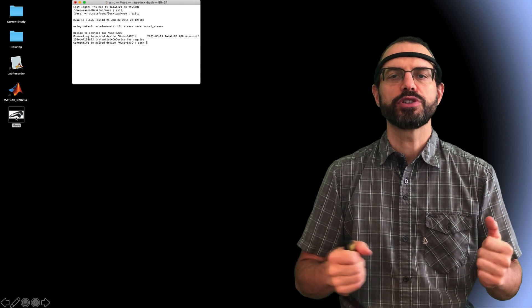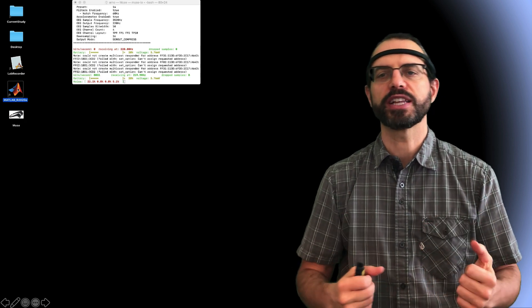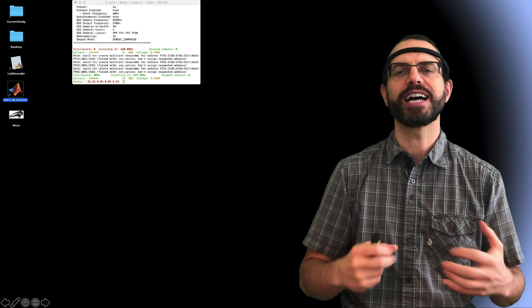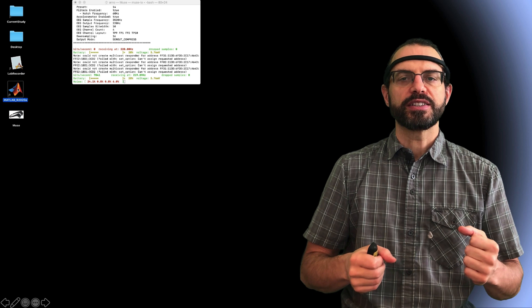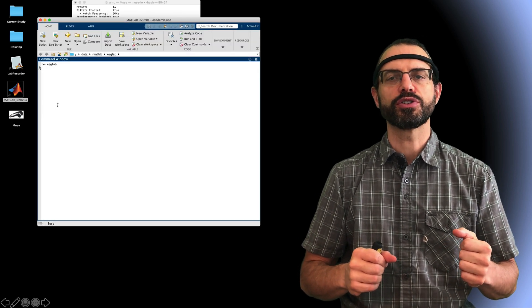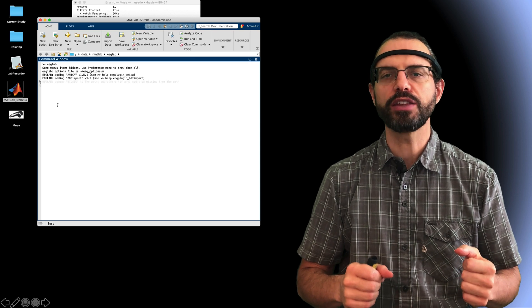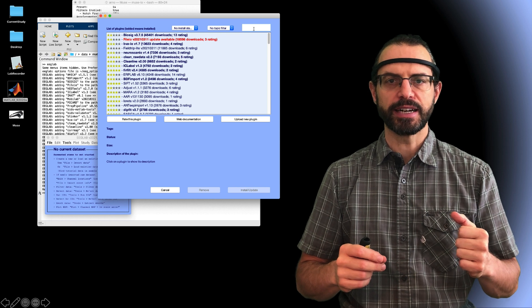Then I start the LSL software to connect to the Muse headset. Each EEG device and each device in general that can produce an event stream has its own software, often provided by the manufacturer. I then start MATLAB and EEGLAB and install the MATLAB Viewer Recorder plugin using the EEGLAB plugin manager. I search for LSL.